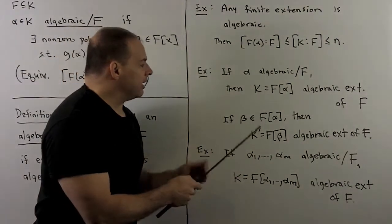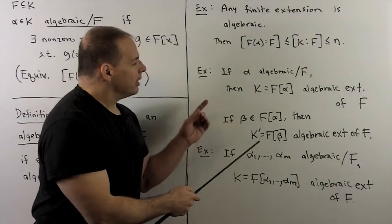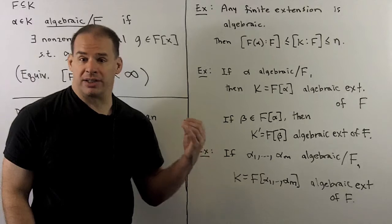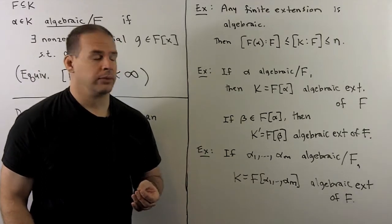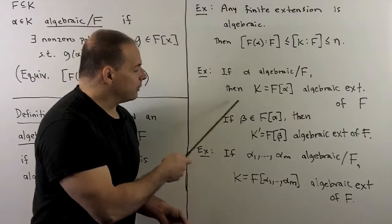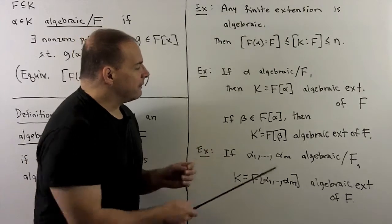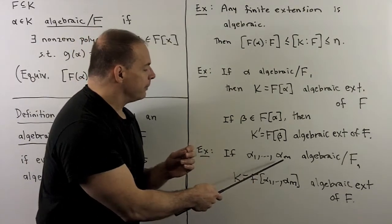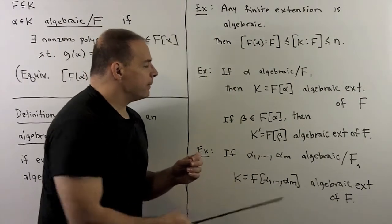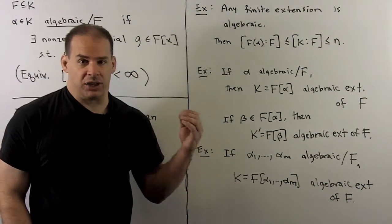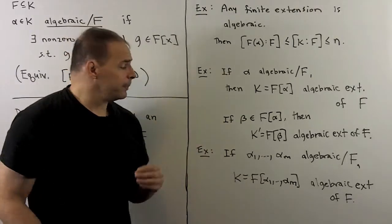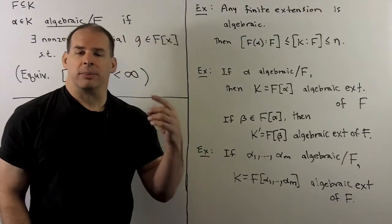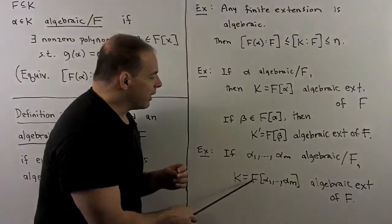Likewise, if I take beta in f adjoin alpha, then k prime equal to f adjoin beta is also an algebraic extension of f. Finally, going with this idea, if I take a finite number of algebraic elements over f — say alpha 1 through alpha m — we take f adjoin alpha 1 through alpha m, that's an algebraic extension of f. We've seen last time that if we take any element here, its degree is going to be less than the product of the degrees of the alphas.